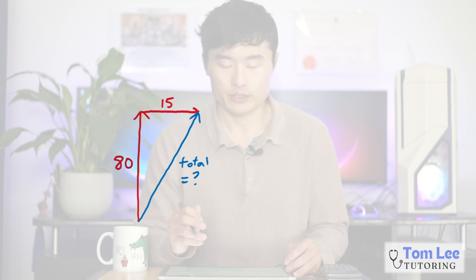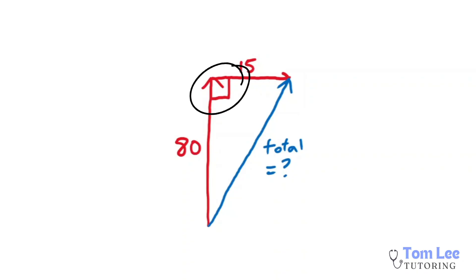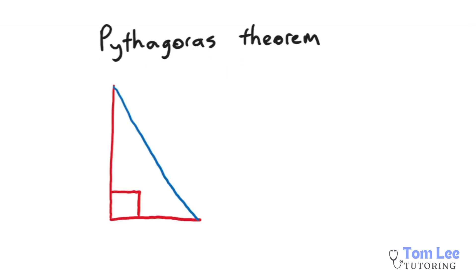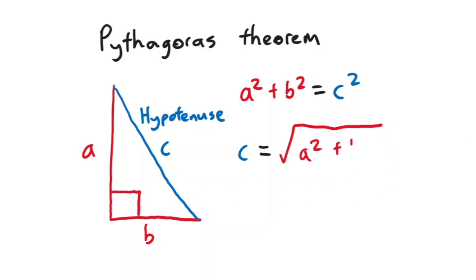We know that north and east are perpendicular to each other, so they will create a right angle of 90 degrees. This means that we can use something called Pythagoras' theorem. Here we have a right angle triangle where a and b represent the legs of this right angle triangle and c represents the hypotenuse. The formula is a squared plus b squared is equal to c squared. We want to find c, the hypotenuse, so we rearrange it: c is equal to the square root of a squared plus b squared, taking the square root of both sides to get c on its own.